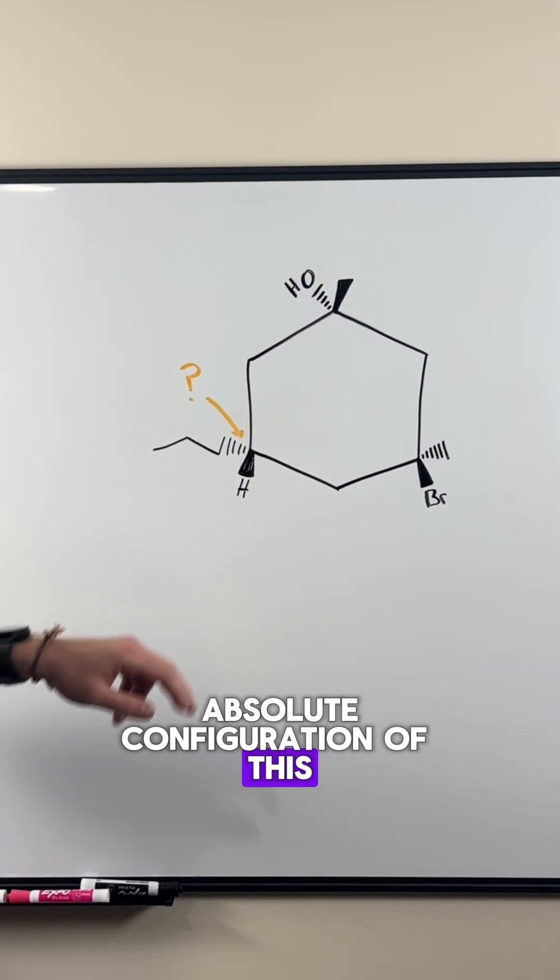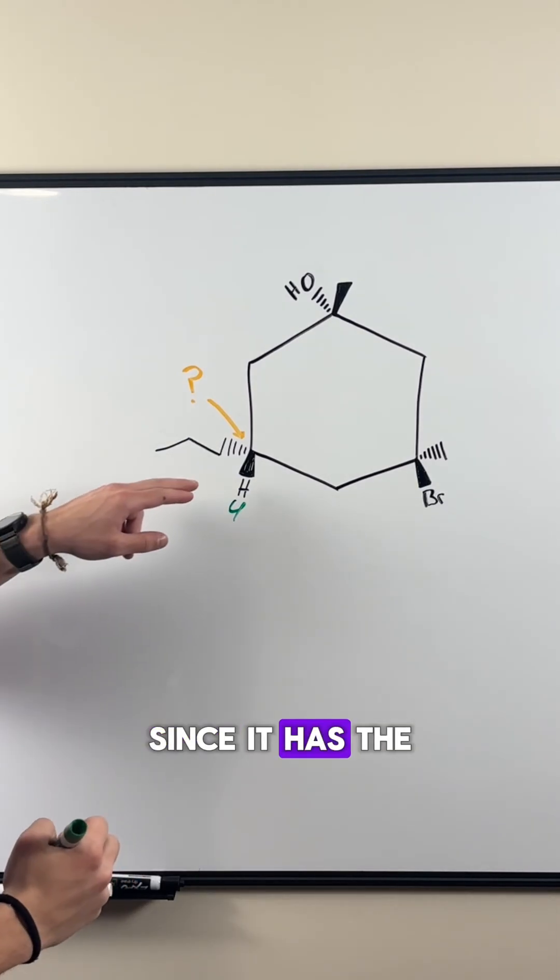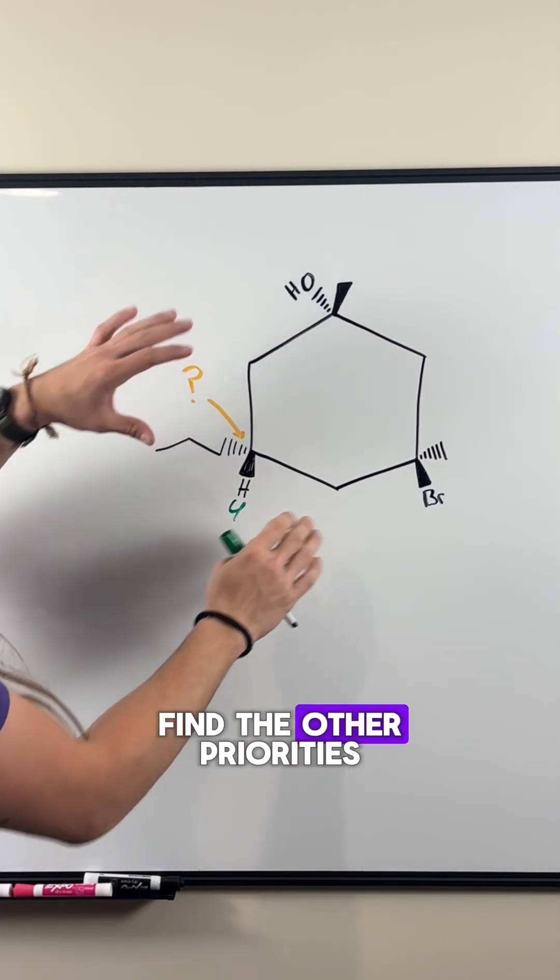Can you find the absolute configuration of this chiral carbon? Our hydrogen will have our lowest priority since it has the smallest atomic number, but how do we find the other priorities?